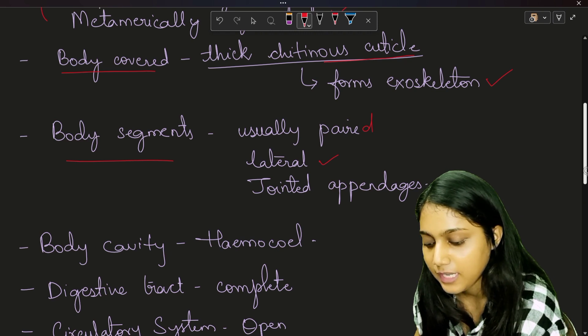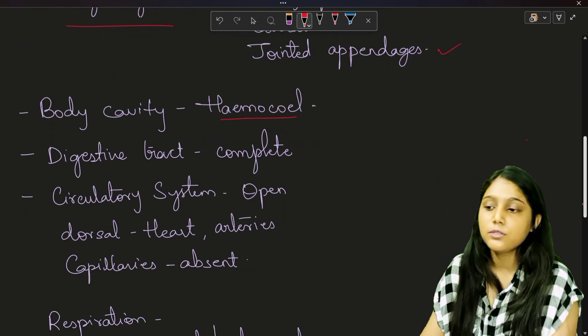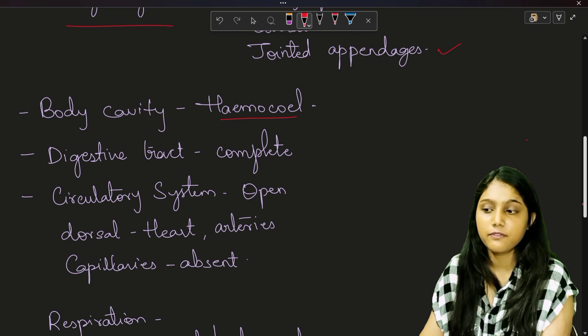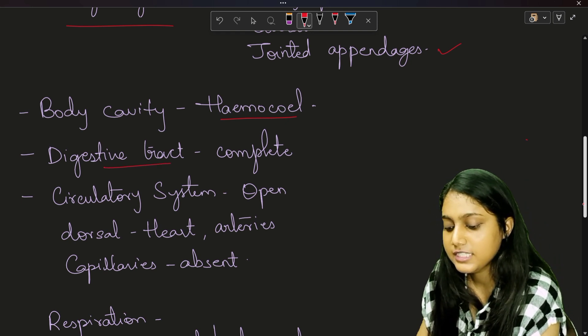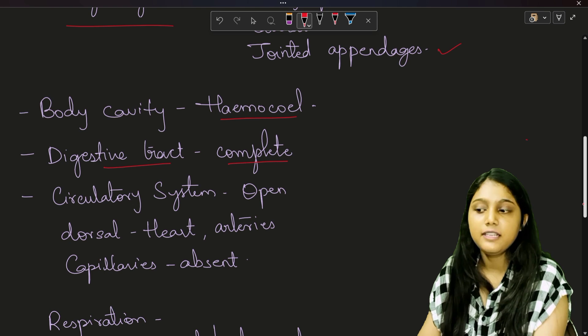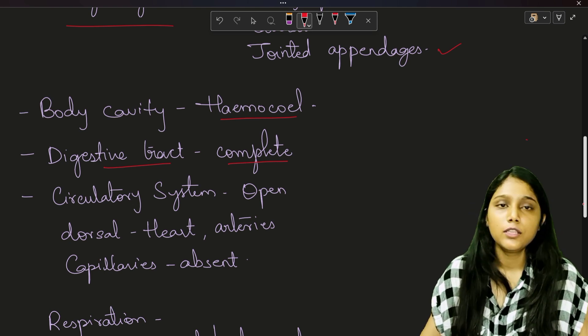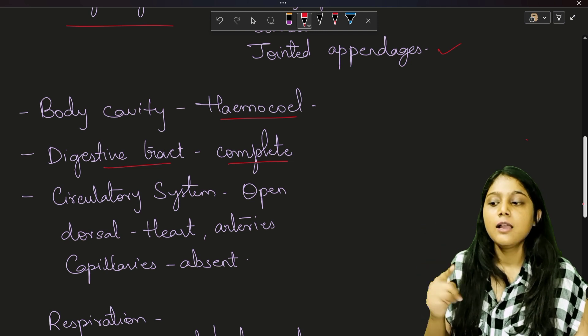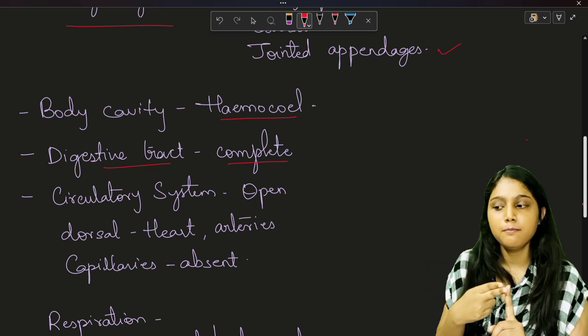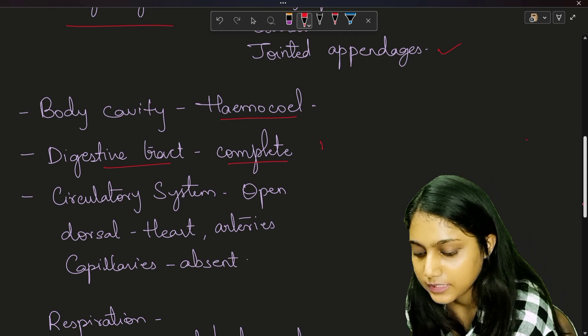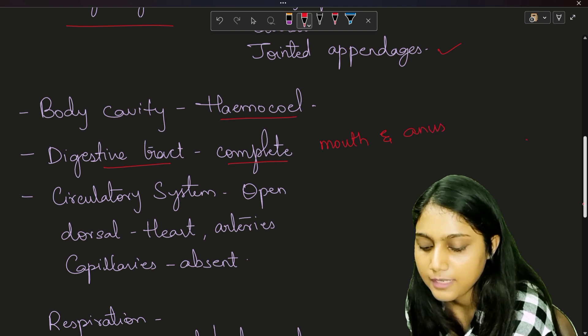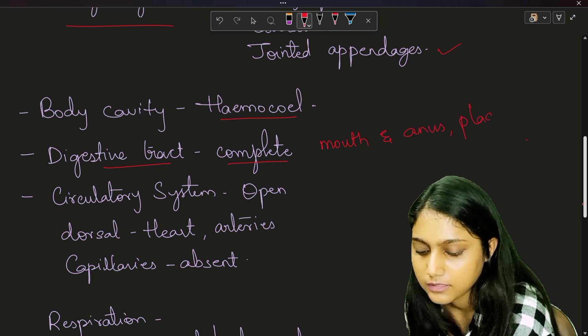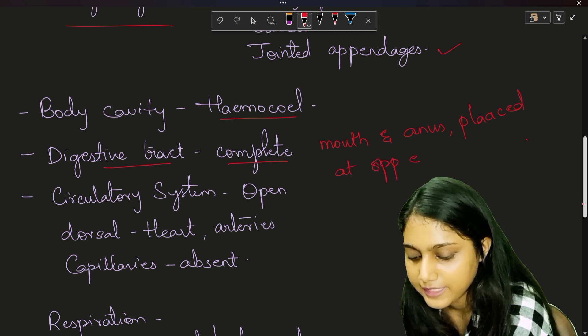Next, we'll talk about the body cavity. Now the body cavity is hemocoel. The true coelom is reduced and it is replaced with perivisceral hemocoel filled with blood. Now talking about the digestive tract, digestive tract is complete. Now what do you mean by complete digestive tract? Complete digestive tract means two openings - mouth and anus. Mouth through food, anus through waste material. Now the mouth and anus are placed at opposite ends.